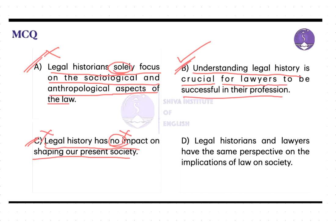Moving to option D: it states that legal historians and lawyers have the same perspective on the implications of law on society. However, the passage does not provide any information about the perspectives of legal historians and lawyers being the same or different on the influence of law on society. This makes option D unsupported and incorrect. Hence, we confirm that option B is the correct conclusion to the text.